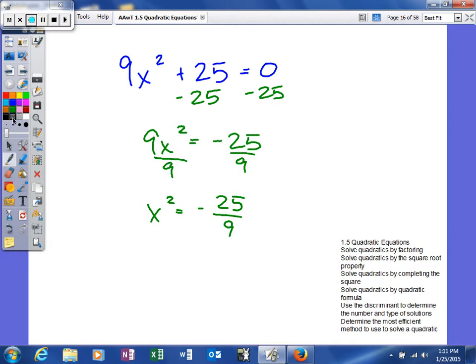And you'll get x squared is equal to negative 25 ninths. And then, lastly, to get rid of the square root, or the square, we can take the square root of both sides. Our answer, of course, like I said, anytime you're solving for x and you take the square root, your answer is going to be plus or minus.